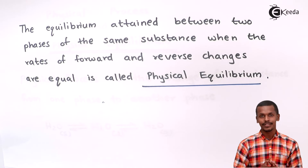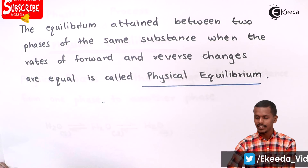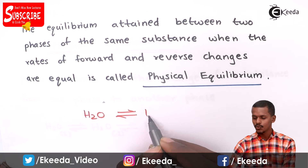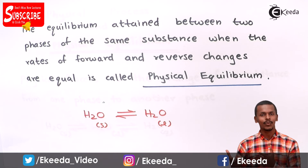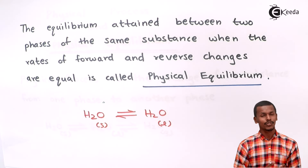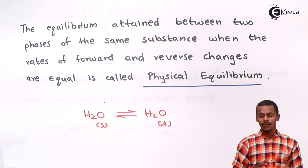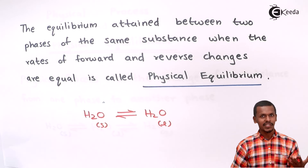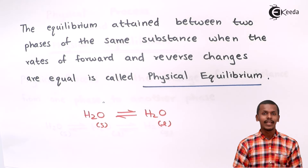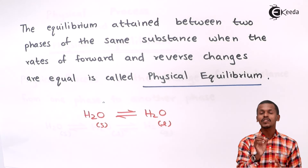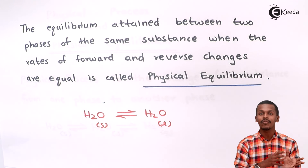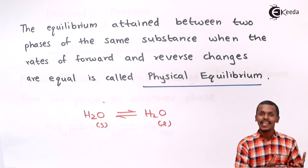Physical equilibrium deals with the rate of change. Consider the same H2O example: H2O is converting from solid phase to liquid phase, and simultaneously liquid water can be converted into the solid phase, that is ice. The phase transition is possible in both directions. When it comes to physical equilibrium, it depends on the rate — there will be a certain point where the rate of conversion from solid phase to liquid phase and from liquid phase to solid phase will be the same.